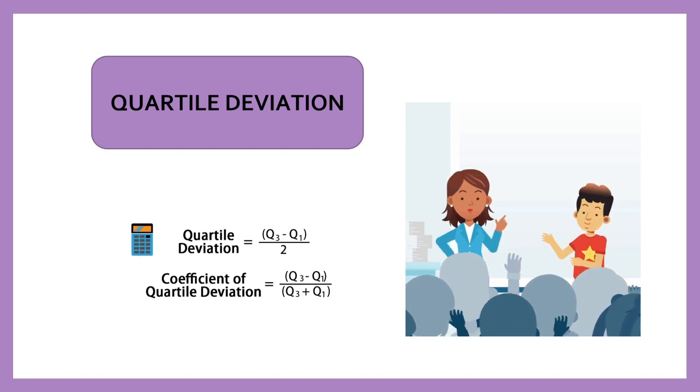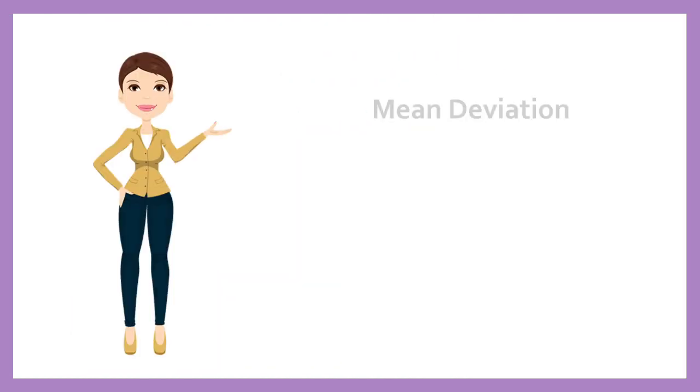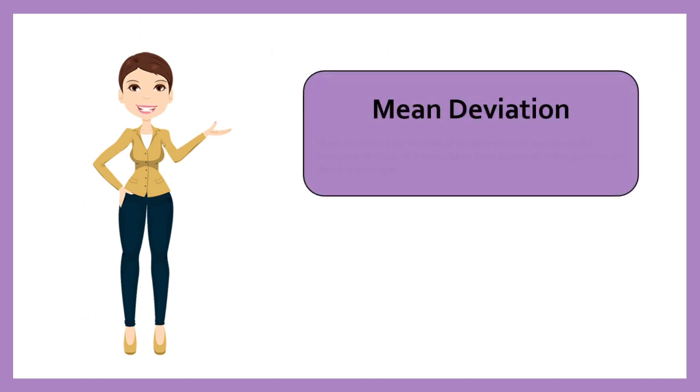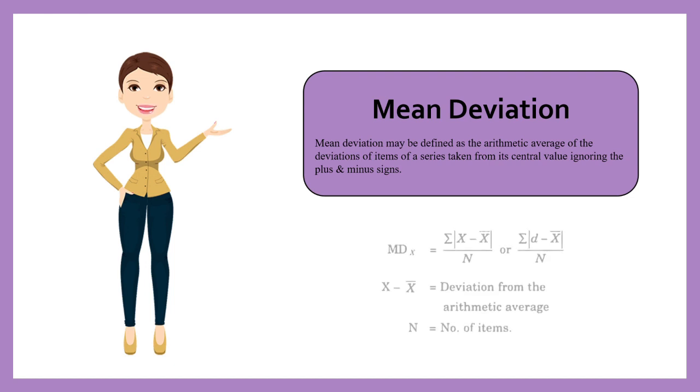Mean deviation may be defined as the arithmetic average of the deviations of items of a series taken from its central value ignoring the plus and minus signs. The central value may be mean, median or mode. The signs are disregarded as sum of the deviations from arithmetic mean is always zero. It is also known as first moment of dispersion.